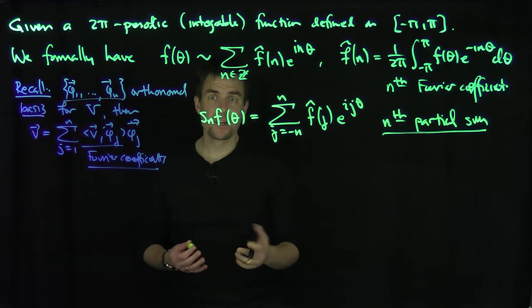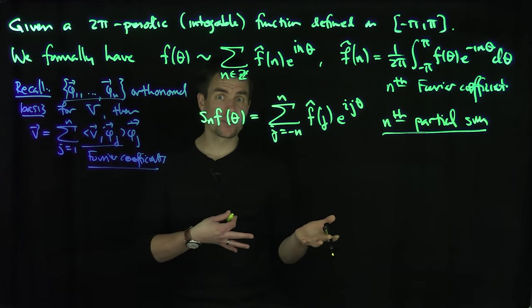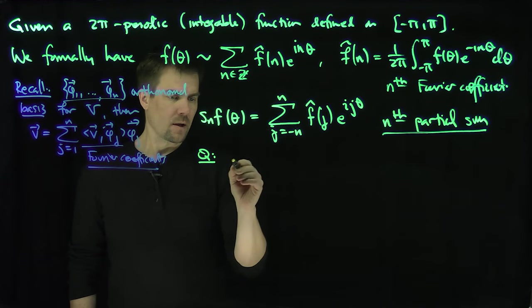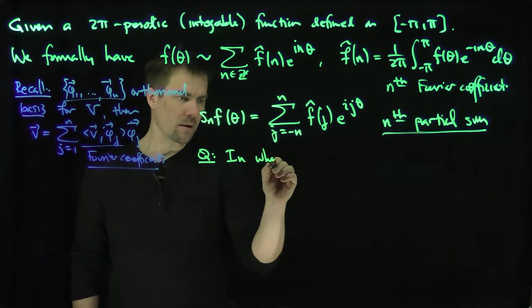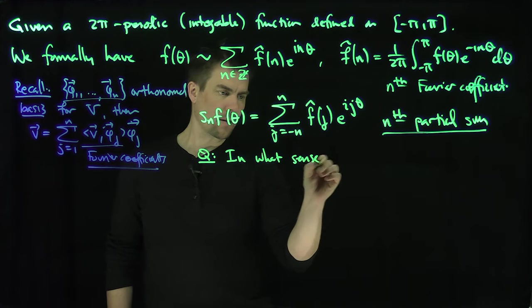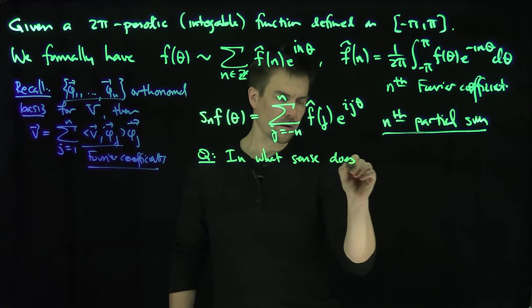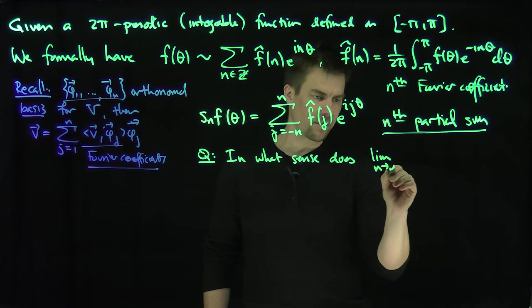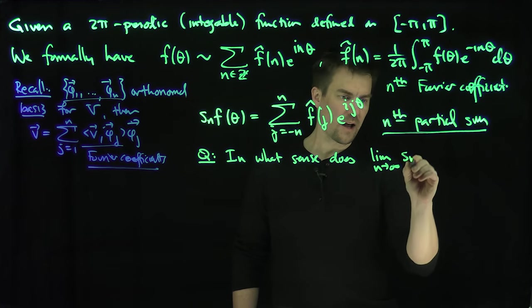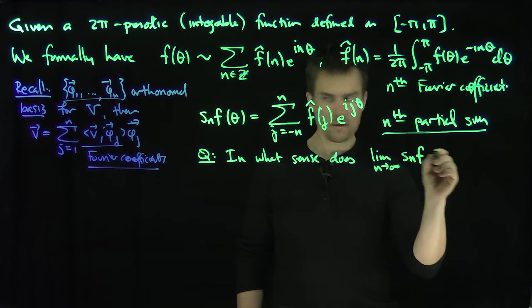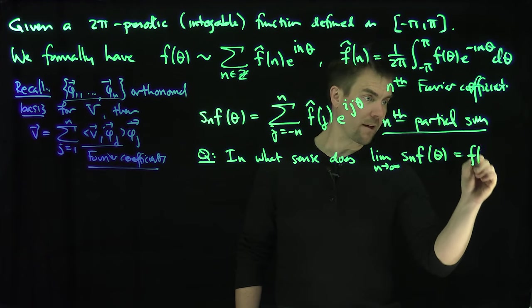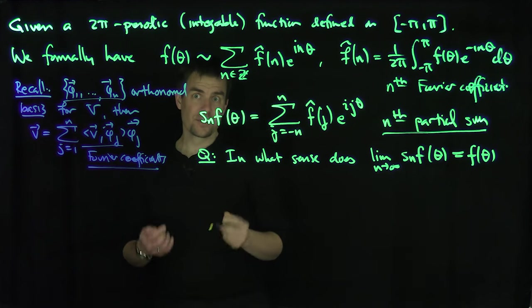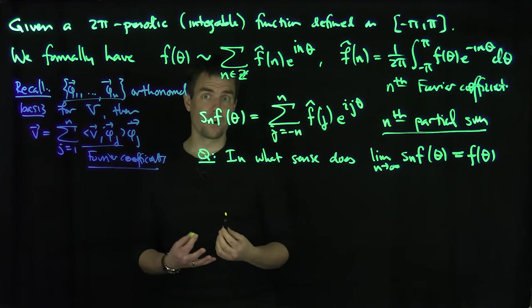Now I can ask the question, in what sense does this partial sum converge? So question: in what sense does the limit as n tends to infinity of Sₙf(θ) equal f(θ), if it equals that at all?